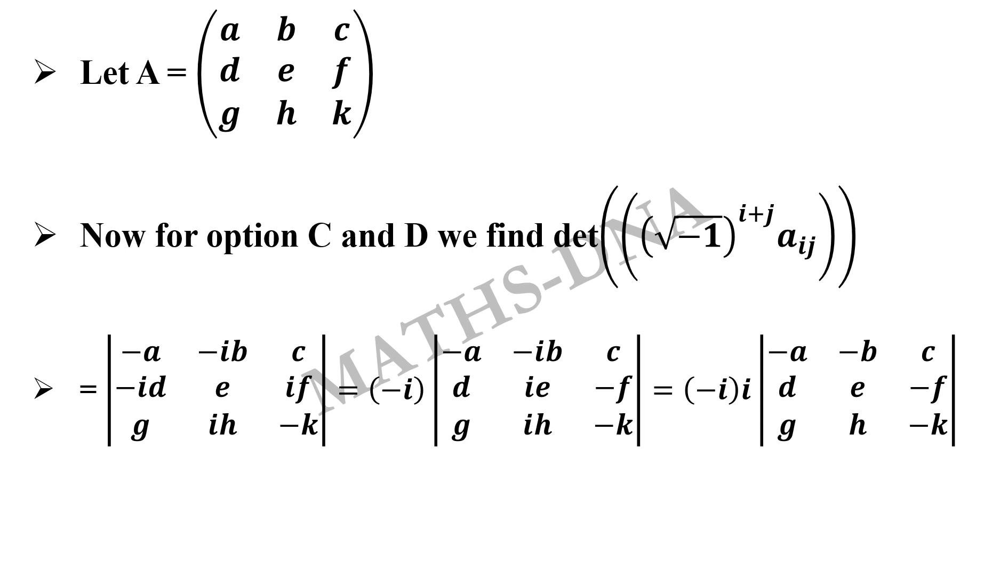Now taking again minus sign common from the middle row, we get D, IE and minus F. Again taking i common from the middle column, we get minus i into i and the determinant of the remaining matrix, which is again simplified and we get it as determinant of A.